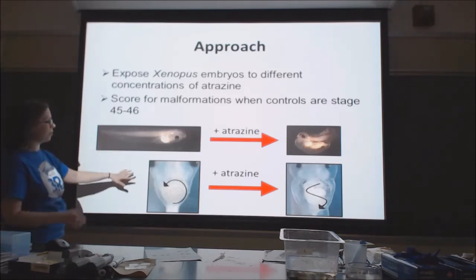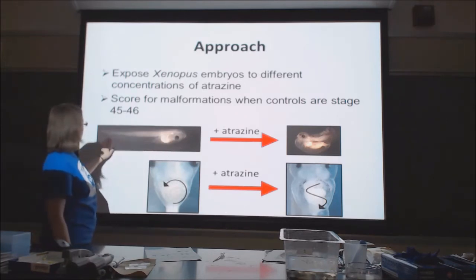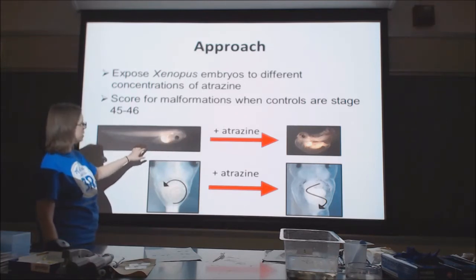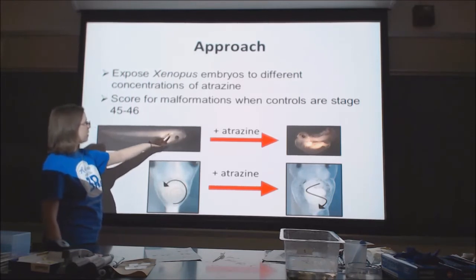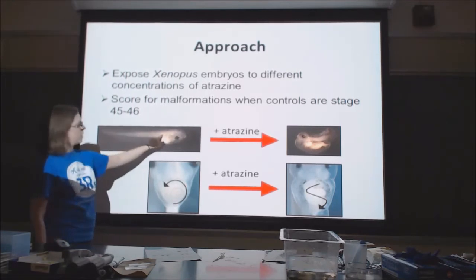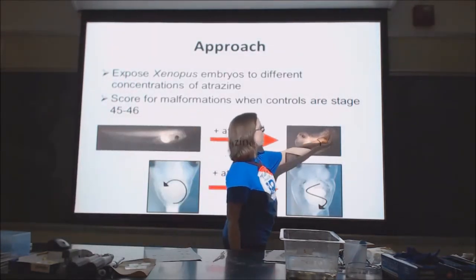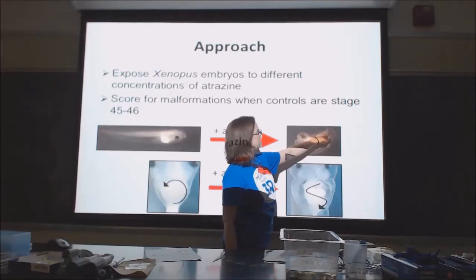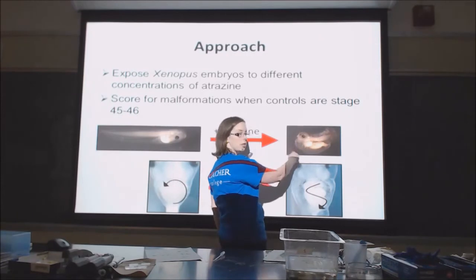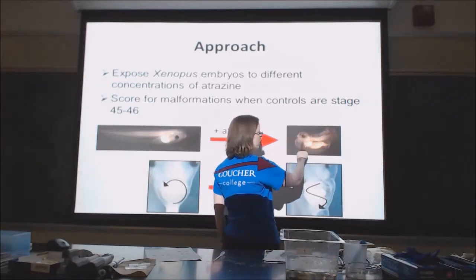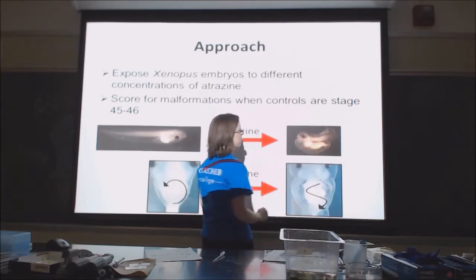Here are examples of malformations I counted. A normal control Xenopus tadpole at stage 46 shows the intestines, the eye, the cloaca, and a nice long straight body axis. In tadpoles exposed to atrazine, the axis is severely reduced, the tail is malformed, and there are large blister-like edemas. The intestine also looks very different.